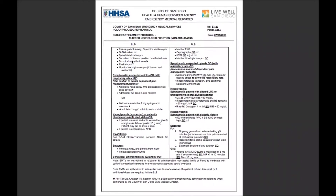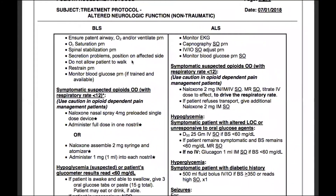We'll start off by ensuring a patent airway, O2 and/or ventilate as needed, O2 saturation as needed, spinal stabilization as needed — sometimes you don't always know if it's medical or trauma. For secretion problems, position the patient on the affected side, do not allow the patient to walk, restrain as needed, and monitor blood glucose as needed if trained and available.